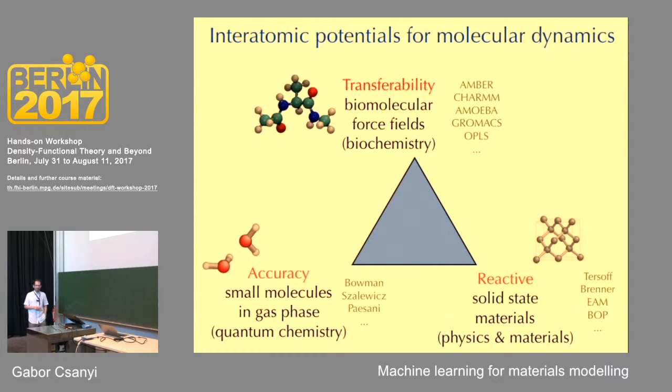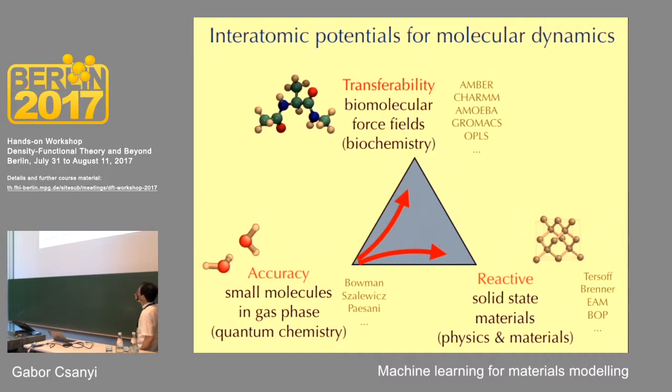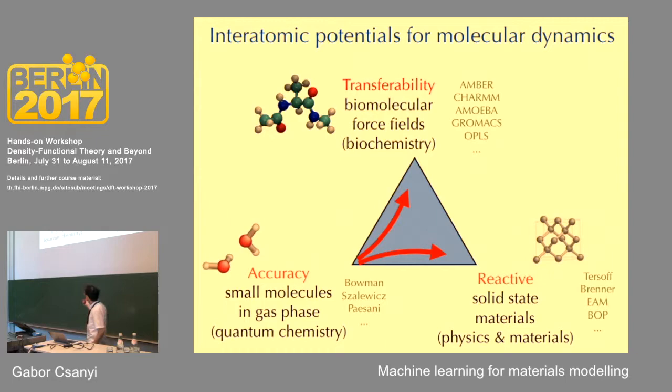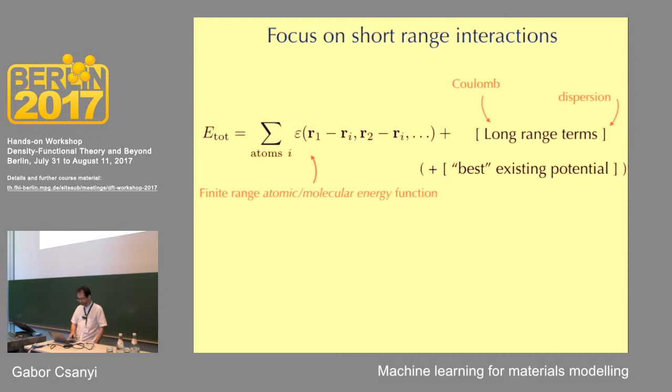People have spent the last 30 years trying to fit potential energy surfaces for small molecules. Some of the names are Joel Bowman, Christoph Salavitz, Francesco Paesani — they have been rather successful, but they have not used the mindset of machine learning. What I'm hoping machine learning will do is take that accuracy and enable us to make models for organic and biomolecular molecules and reactive solid-state systems with accuracy similar to what quantum chemists have achieved for small molecules.